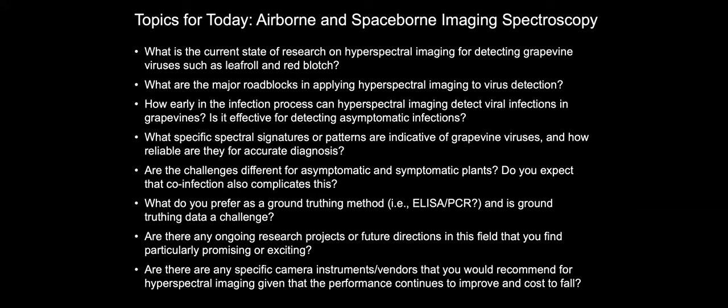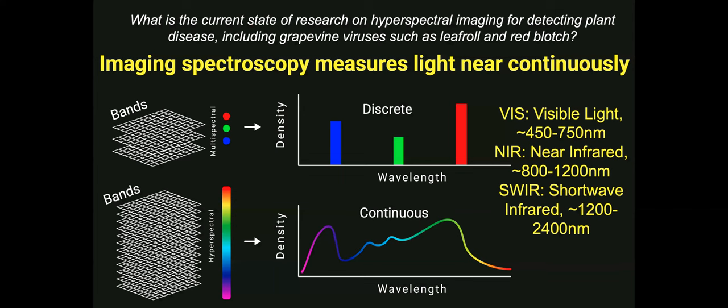Throughout this talk, I'll be addressing these questions and have them highlighted on the slides as we address them. First, I'd like to discuss what the current state of research on hyperspectral imaging for detecting plant disease, including grapevine viruses such as leaf roll and red blotch. Hyperspectral imaging is a colloquial term for imaging spectroscopy, which is the science of how light interacts with our world.